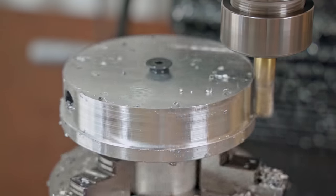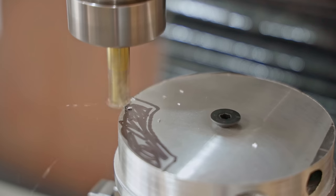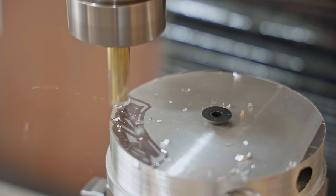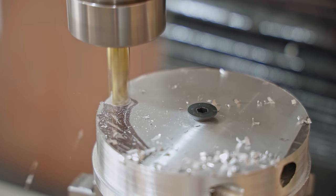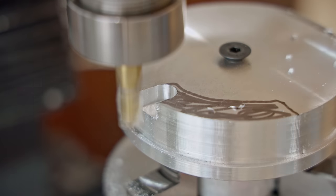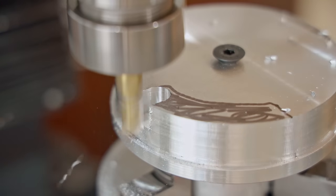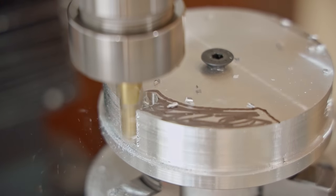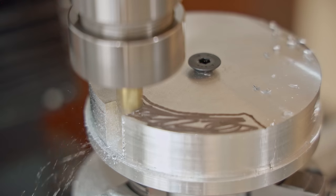Next I need to mill out a recess for a cam lever, and this was the operation that I needed the rotary table for. I could have just cut it out and filed it, but as I said, I really should get some use out of the rotary table. I'm milling both ends of the recess first, and then I'll cut the section out between them afterwards.